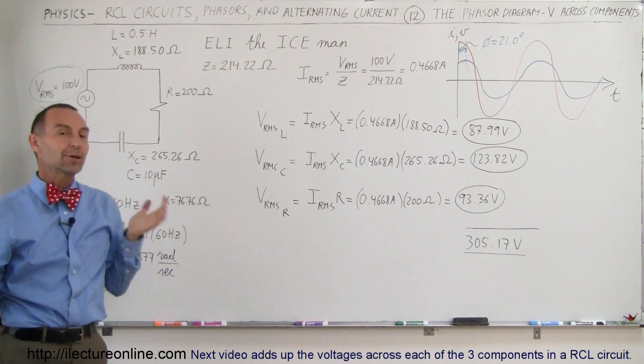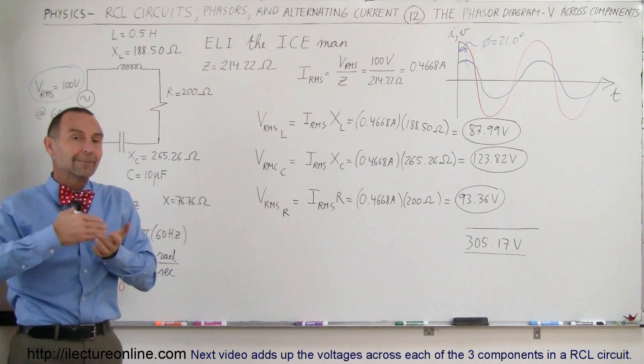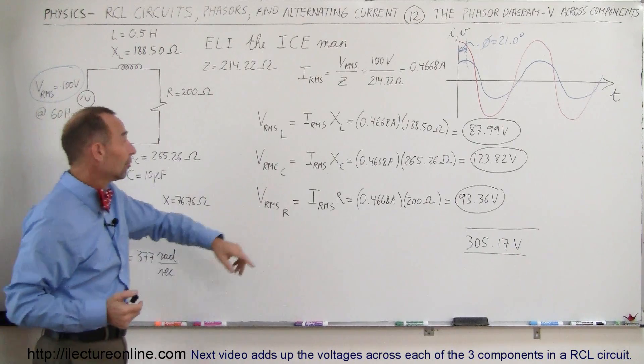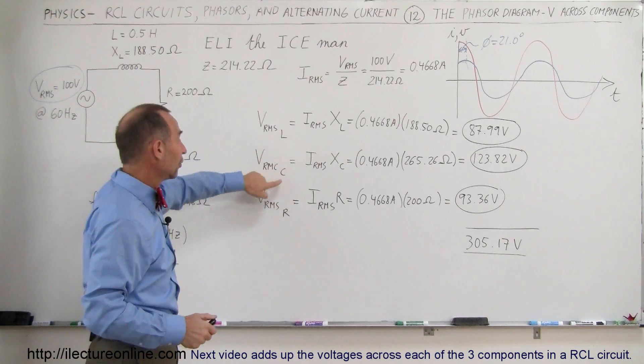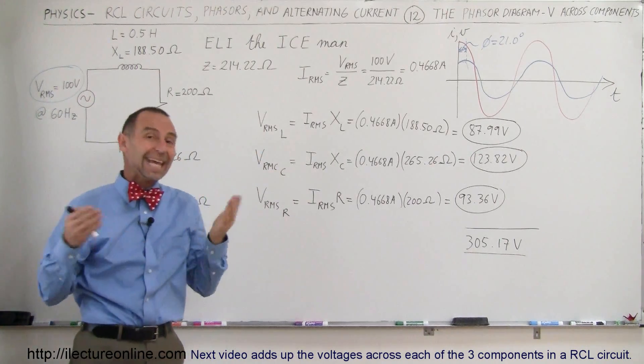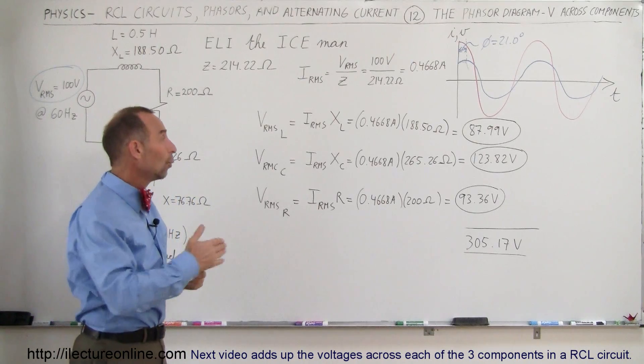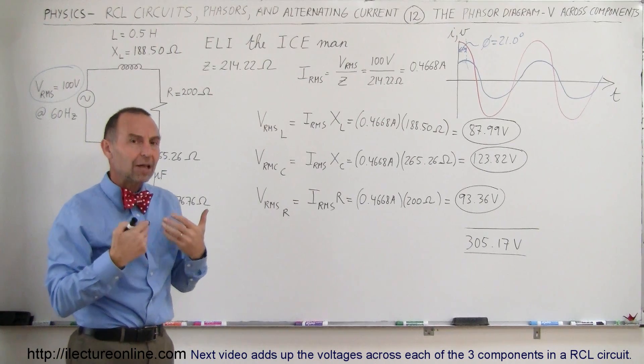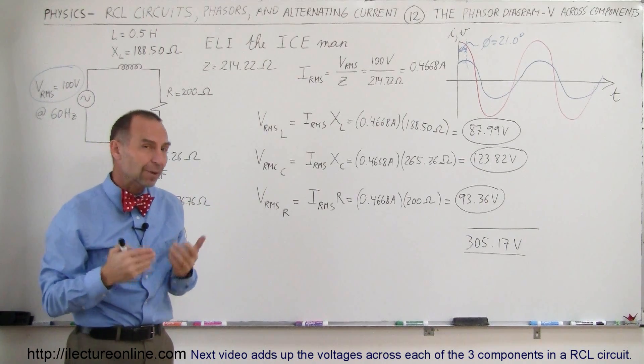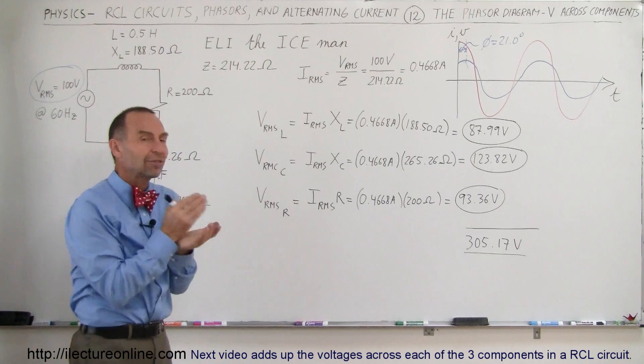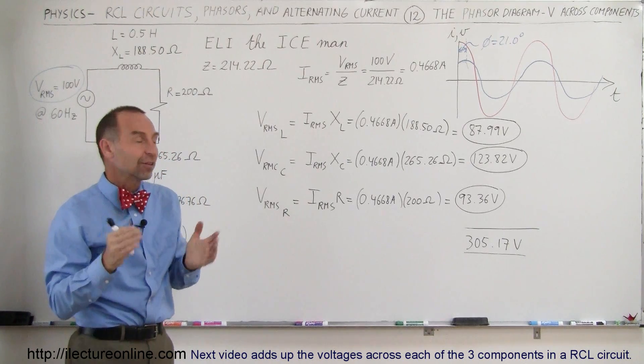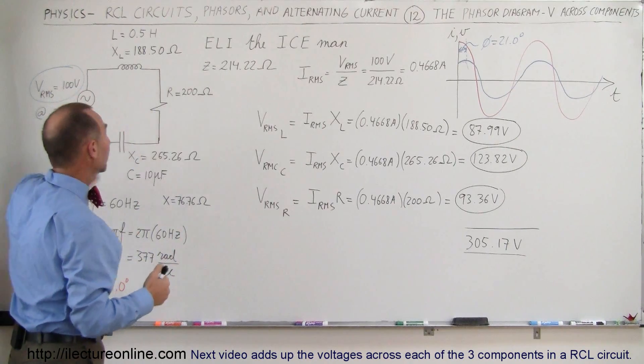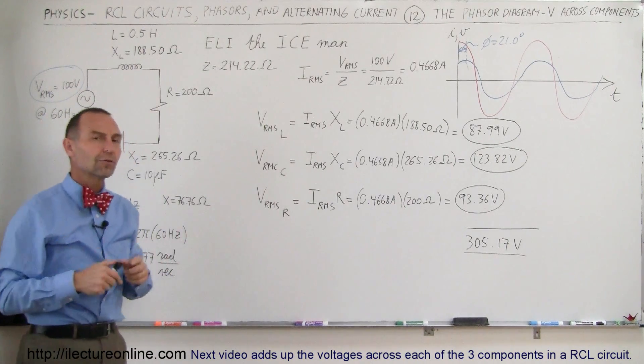The answer is because those voltages do not reach a maximum value across those components at the same time. They're out of phase. Matter of fact, the voltage across the inductor and the voltage across the capacitor are 180 degrees out of phase. So when one reaches a maximum, the other reaches a minimum. We cannot just algebraically add those three together. We have to add them vectorially, taking into account the phase difference. And if we do that, then they should add up to always, no matter what phase we're in, 100 volts total, the voltage of the source.